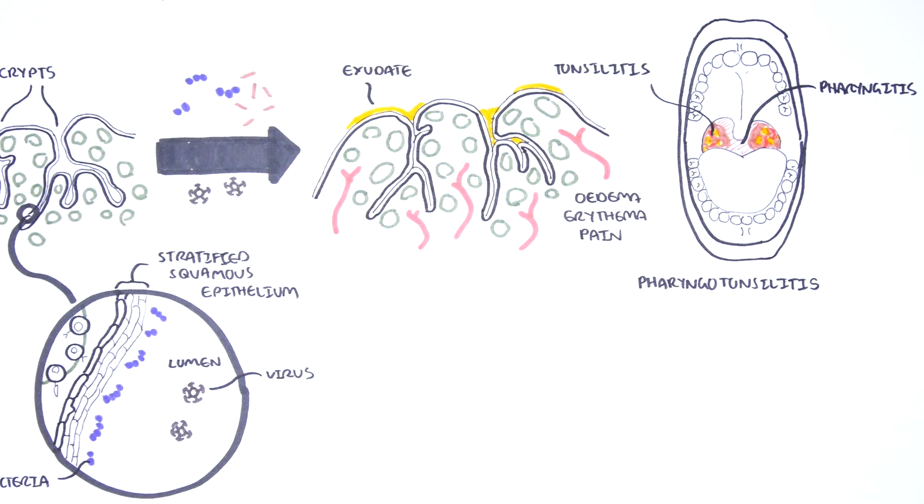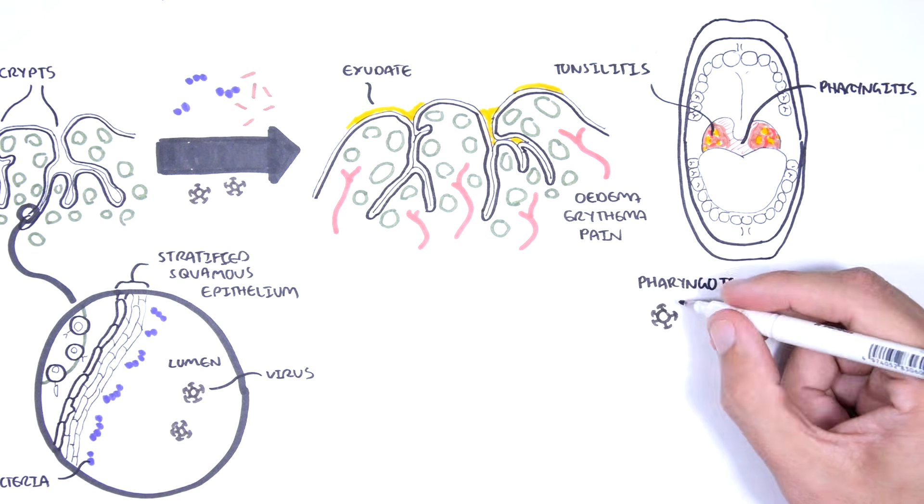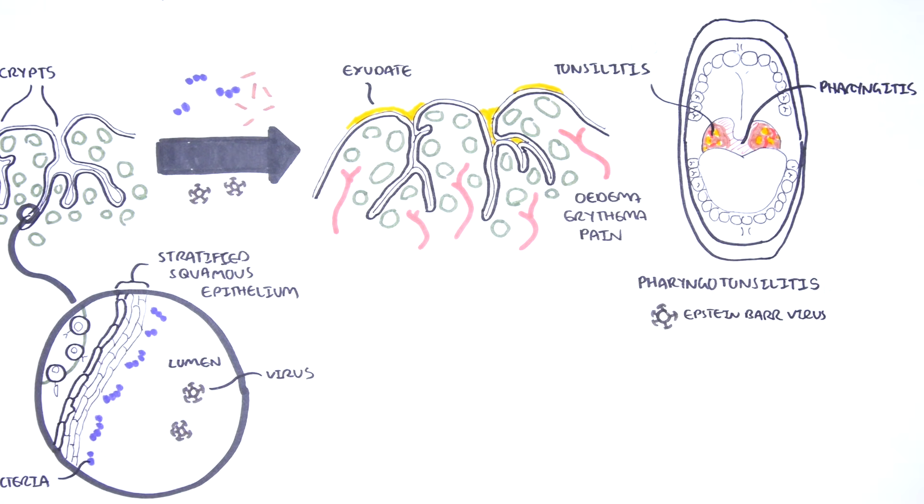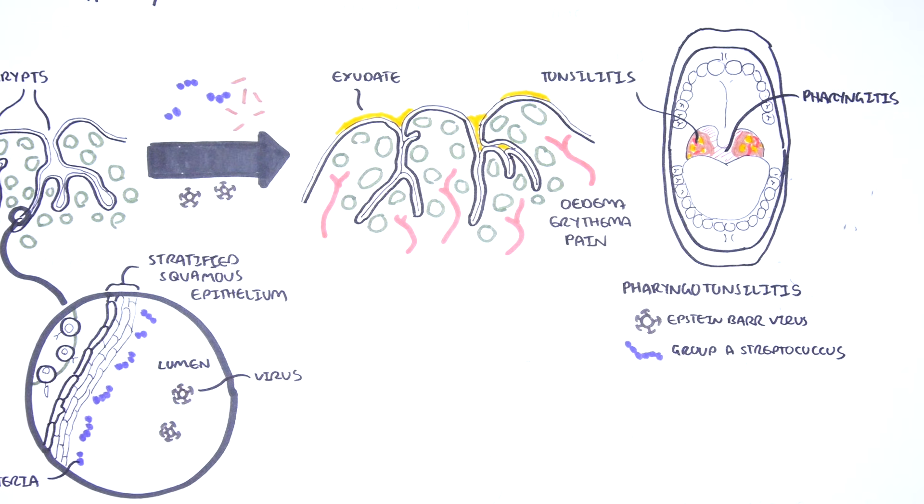The majority of cases of tonsillitis are caused by viruses. Common viral organisms that cause tonsillitis include Epstein-Barr virus, EBV, adenovirus, rhinovirus, respiratory syncytial virus, influenza, and parainfluenza. The most common bacterial causes of acute tonsillitis is group A streptococcus, also known as strep pyogenes. We will focus on the two most important clinical causes of acute tonsillitis: Epstein-Barr virus and group A streptococcus.